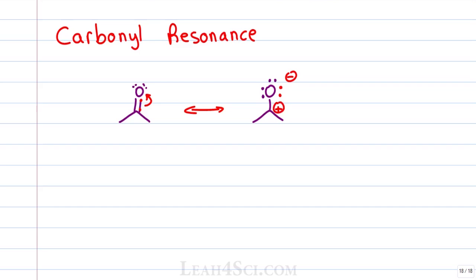This separation of charge makes it unstable and unhappy so we're more likely to see the neutral form but the fact that this resonance can happen means that we can expect to see some version of the resonance hybrid with a partial negative on oxygen and a partial positive on carbon. That partial positive is what makes carbonyl reactions happen.